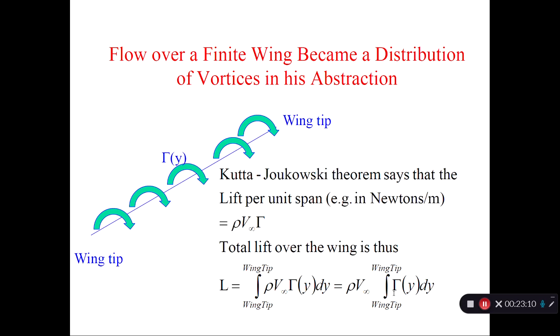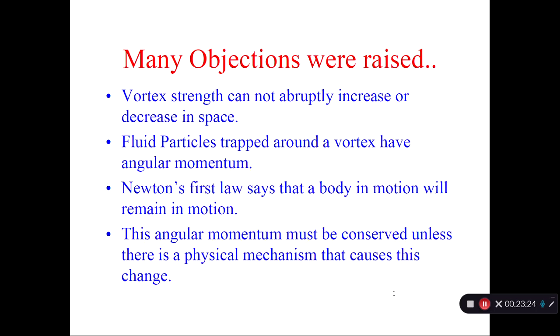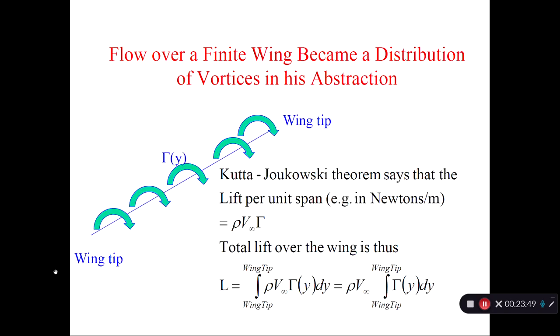Gamma has got units of velocity times distance because it's v dot ds around the closed contour, as we saw in our Building Blocks lectures, Chapter 3 lectures some time ago. As soon as Prandtl did this, people started raising questions. Remember, vortex is vorticity. A lot of vorticity lumped in one place for mathematical convenience here. That means we have fluid particles that are rotating. They have some angular momentum. How can angular momentum abruptly restart at one point and abruptly end at another point?